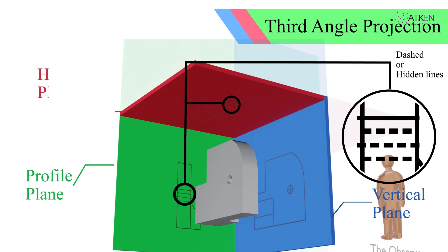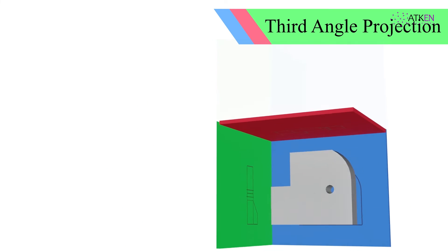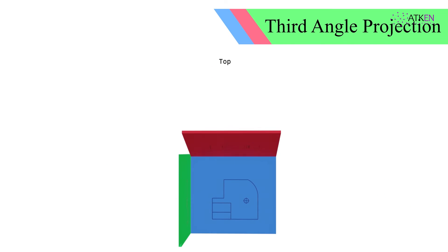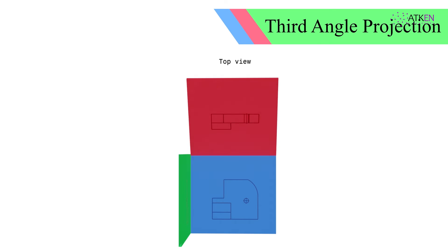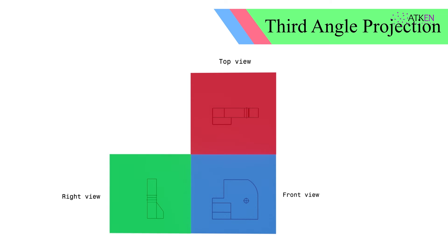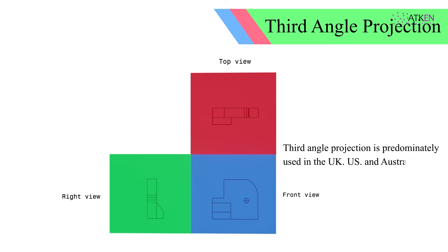When these planes are rotated into a single plane — the vertical plane — the top view appears to be placed above the front view, and the right-hand side view comes to the right side of the front view. Third angle projection is predominantly used in the UK, US, and Australia.